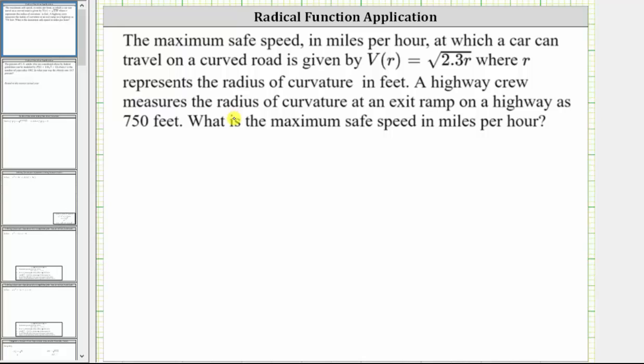A highway crew measures the radius of curvature at an exit ramp on a highway at 750 feet. What is the maximum safe speed in miles per hour?